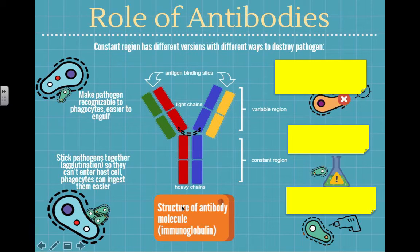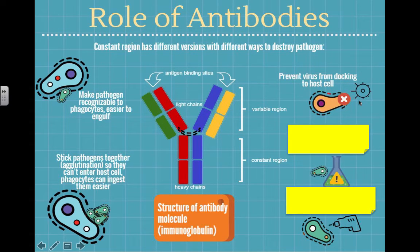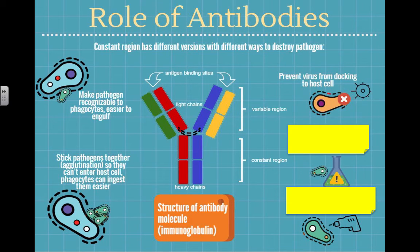Viruses can also be dealt with in another way: antibodies can stick to viruses and prevent them from docking to the host cell. So if someone's coughing up influenza virus in front of you, when that gets into your mouth and tries to infect your throat cells, your antibodies can bind to the viruses and prevent them from using their lock-and-key mechanism to connect to receptors and get into your throat cells to start replicating.